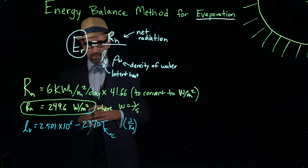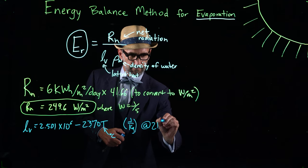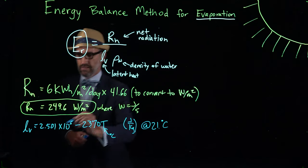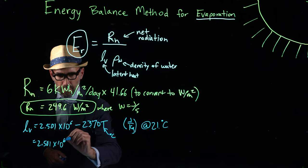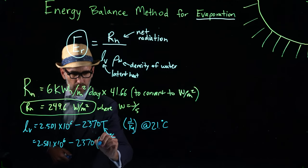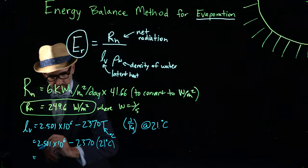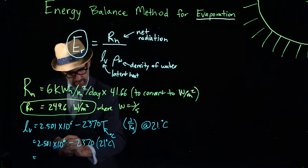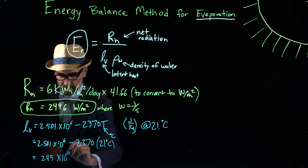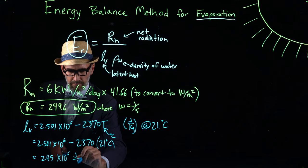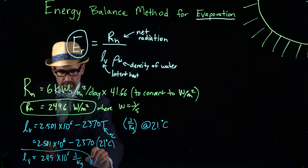And we know Phoenix has a long-term average temperature of 21 degrees C. So we just substitute that into this equation. And the resultant value is 2.45 times 10 to the 6 joules per kg.